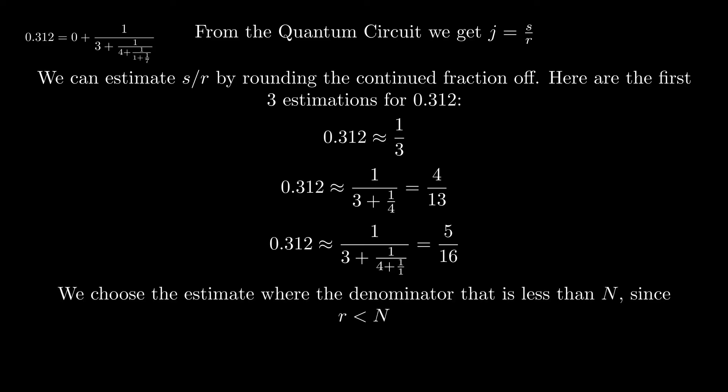To approximate s over r, we find an approximation where the denominator is less than N, since the period r must be less than N. If r is odd, then we repeat the algorithm and get a new value of r. Now that we have a value for r, we can use this to find the factors of N.